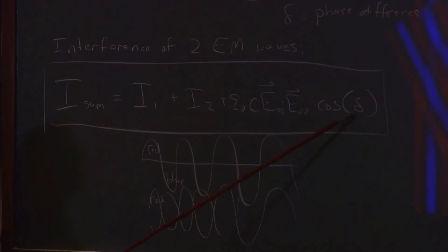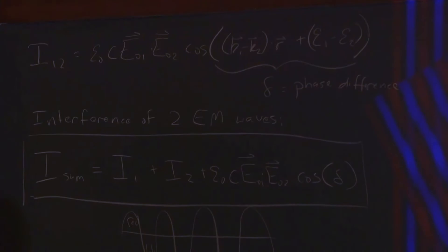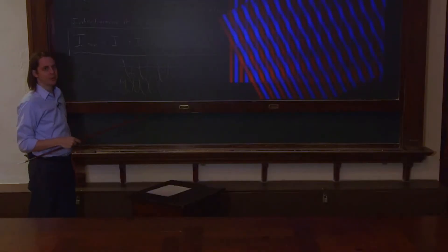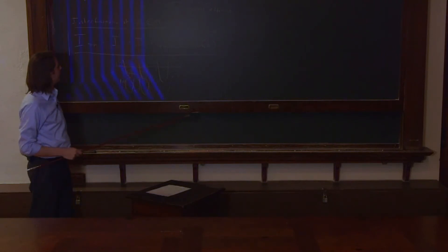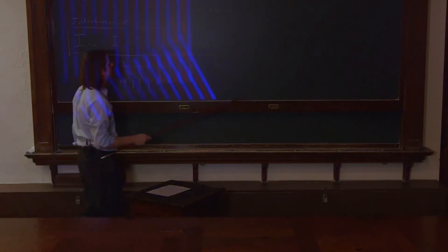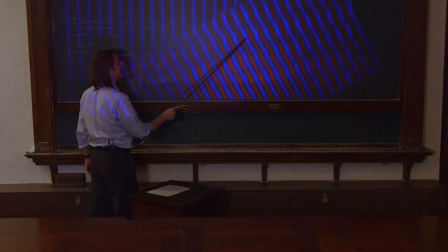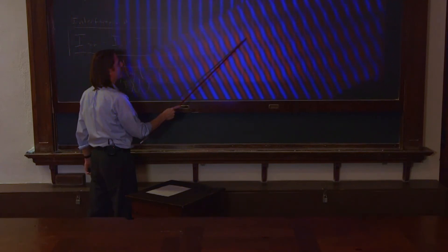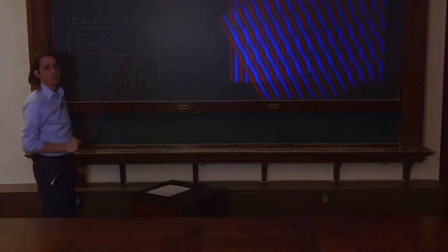Notice that the interference term doesn't depend on time — there's nothing in here that depends on time. So if you sit at one place as these two waves pass each other, and if it's a maximum, it should always be a maximum; if it's a minimum, it should always be a minimum. Watching the animation again, I'll pick a spot on a maximum band — and even though it's a complicated roving pattern, that point is always a maximum, because there's no time dependence anywhere in this expression.